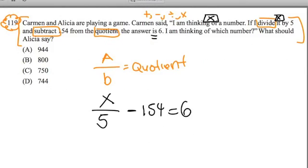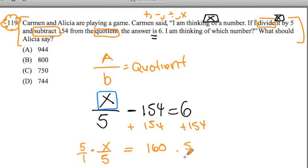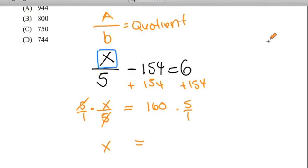Now we go into the algebra portion of this problem, and that's solving for x. I got to remember to keep everything balanced. So here's a minus 154 - I'm going to add 154 to both sides, keeping the equation balanced. I get x divided by 5 is equal to 160. I want to solve for x, so I'm going to multiply by 5 over 1 on both sides. You could just say multiply by 5, but 5 over 1 means the same thing. These cancel each other out. You're left with x is equal to 160 times 5.